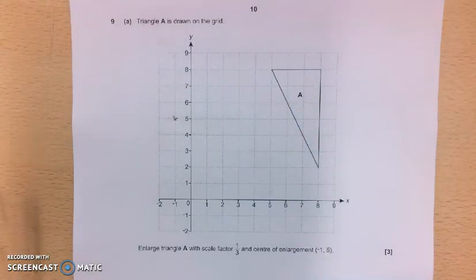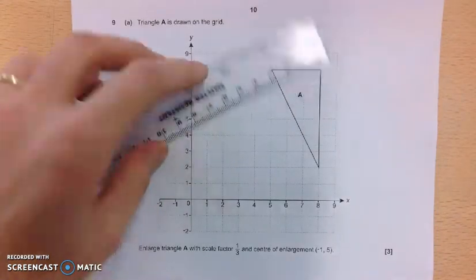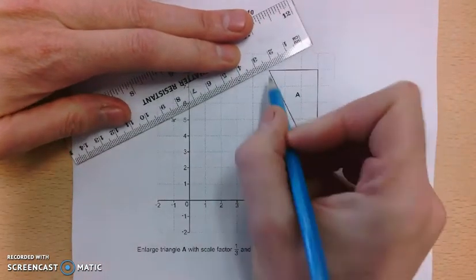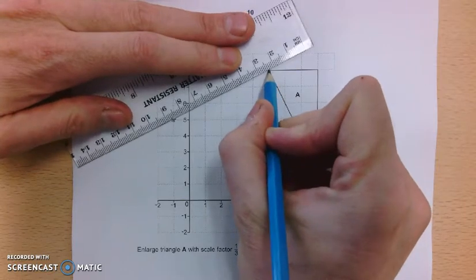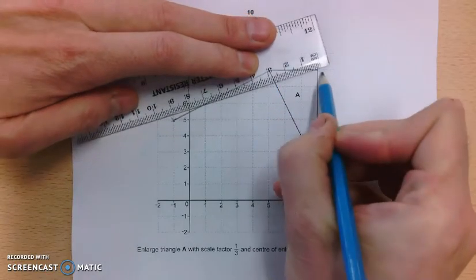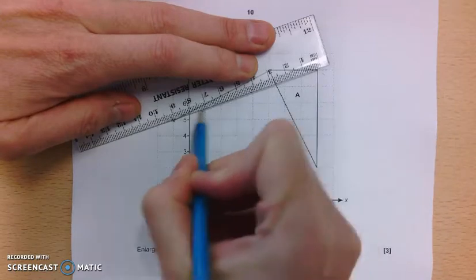And then, to make things clear, I'm just going to draw in some ray lines going from each corner of the triangle to my centre of enlargement. This is going to help make it easier to see in a moment.